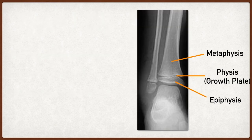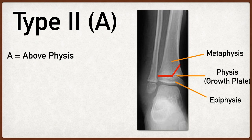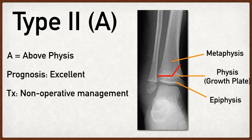A type 2 Salter Harris fracture is a fracture that travels through the growth plate and up into the metaphysis. The way to remember this is to use the second letter of SALTER, which is A, and A stands for above the physis. Prognosis is excellent and treatment is usually non-operative.